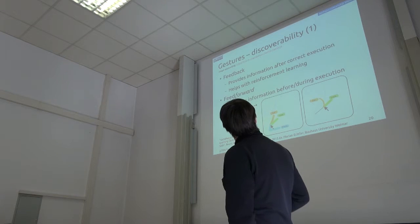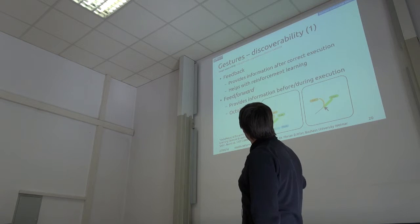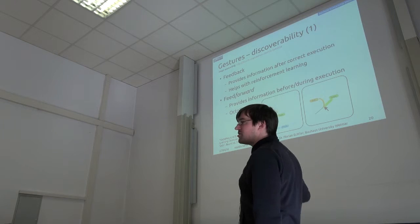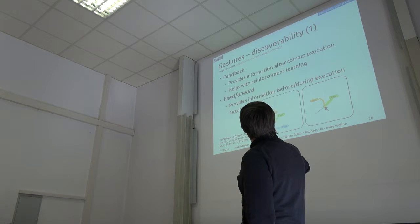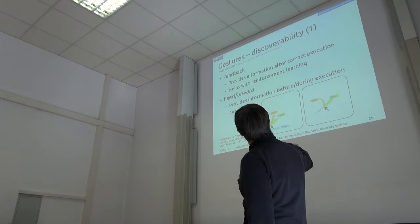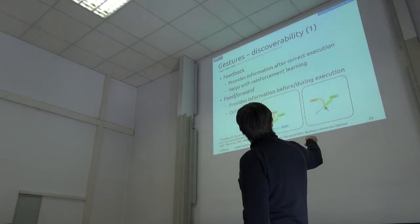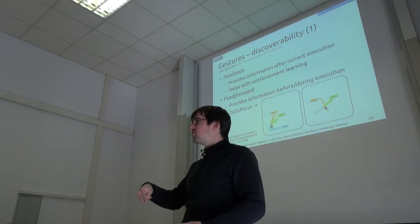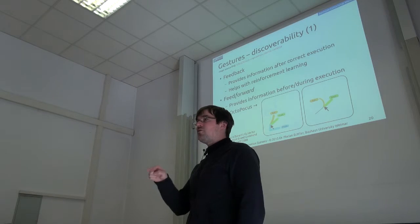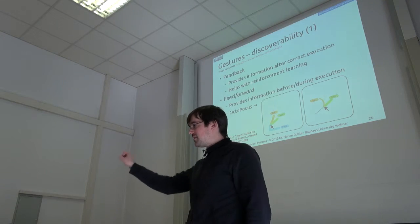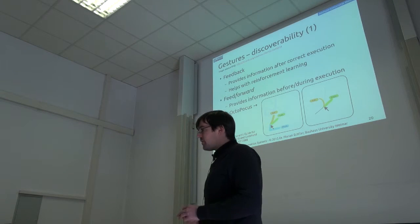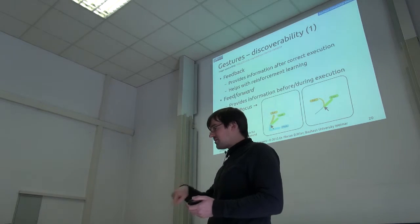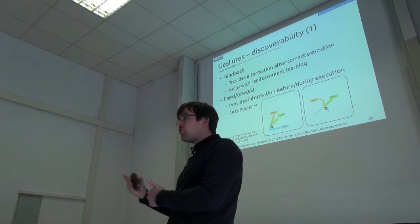There's one interesting research system that's tried to solve this for gestures. It's called Octopocus. It was originally intended for mouse gestures but would also work for touch gestures. When you start a gesture just by touching, it shows you different paths you can take to trigger different gestures. As soon as you start on one path, some possibilities drop out and it only shows you the remaining ones. If you do that often enough, you don't even have to wait for this to show up anymore and can just execute the gesture right away.